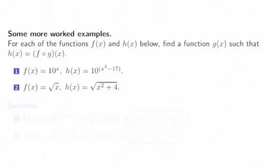Here are some more examples. In each of these functions, we're given f of x and h of x, and we want to find g so that h is the composition of f and g. In problem 1, f is 10 to the x and h is 10 to the x squared minus 17. We're going to try to find a function g so that h is f composed with g.